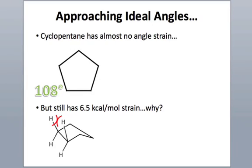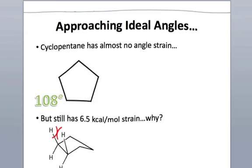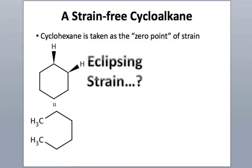Just to rehash things, here is the cyclopentane example. Even though cyclopentane has nearly ideal bond angles, it still has ring strain, and that comes from eclipsing strain. That 6.5 kilocalories per mole corresponds exactly to eclipsing strain — essentially no angle strain, so it's all eclipsing strain. We can determine that experimentally by comparing the stability of open-chain pentane to the stability of cyclopentane.